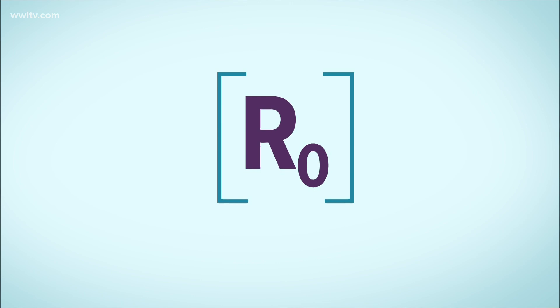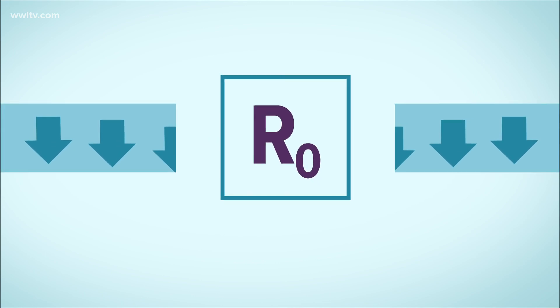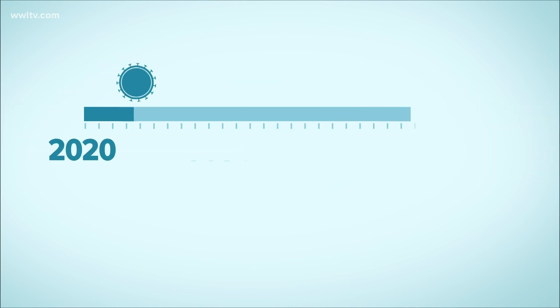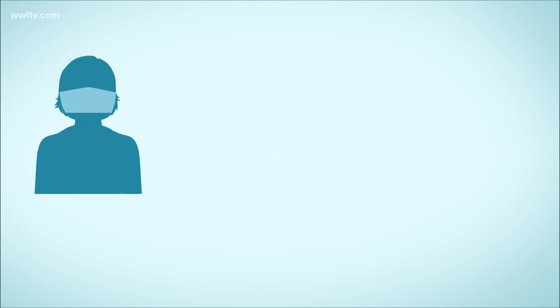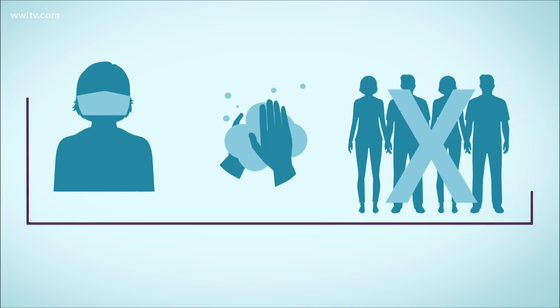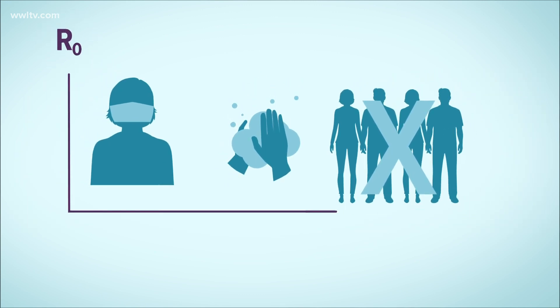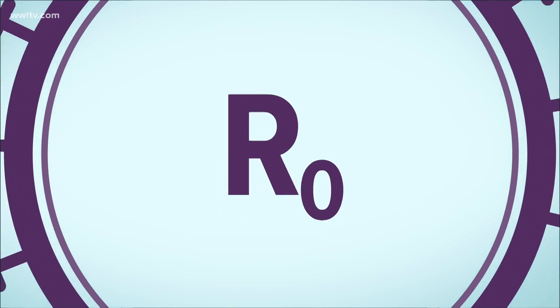The tough part is doing the work needed to reduce the R-naught number. And no one is saying the virus will disappear anytime soon, if ever. But experts do say wearing a mask, washing your hands, and staying out of crowds can help the R-naught number and the number of new virus cases get smaller and smaller.